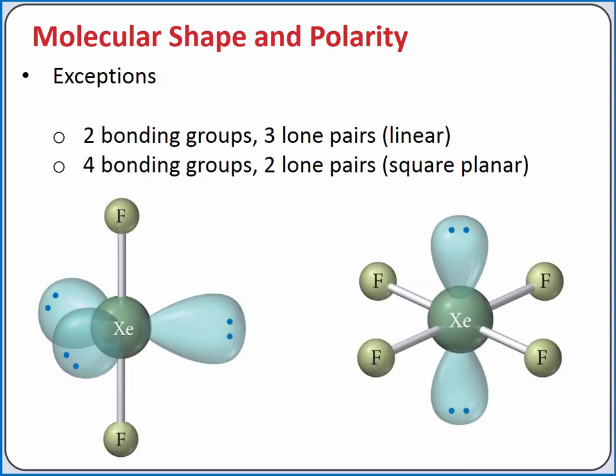However, there are two exceptions. If we have two bonding groups and three lone pairs, we'll have a linear molecular geometry. In this case, the identical polar bonds can cancel each other out, and the lone pairs of electrons can cancel each other out separately. So with identical polar bonds, the linear molecular geometry is nonpolar.